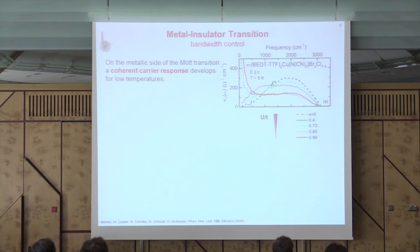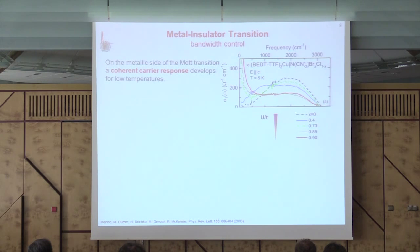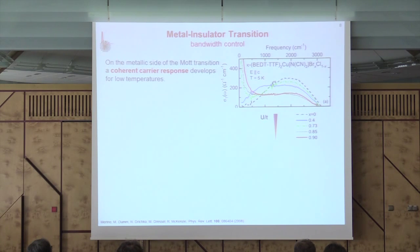We looked at the dynamics through optical experiments on these compounds. The optical conductivity as a function of frequency at low temperatures shows that for a Mott insulator, there is a gap — conductivity only increases above around 500 wave numbers, where you have the Coulomb repulsion U. As you decrease correlations by changing the U/t ratio via different anions, you gradually close the Mott gap — not by shifting it to low frequency, but by filling it in with additional absorption. Eventually a Drude component comes in on the metallic side.